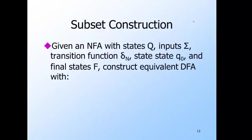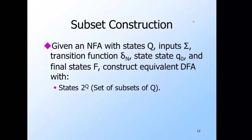Let's start with a typical NFA. We'll use delta-N for its transition function to distinguish it from delta-D, which will be the transition function for the equivalent DFA we're going to construct. The DFA states are represented by 2^Q — the power set of Q, that is, the set of all subsets of Q. Notice that if a set Q has N elements, its power set has 2^N elements. The important point is that the DFA states are actually sets of states of the NFA, and there can be an exponential number of them. The inputs of the DFA are the same as the inputs of the NFA — the set sigma.